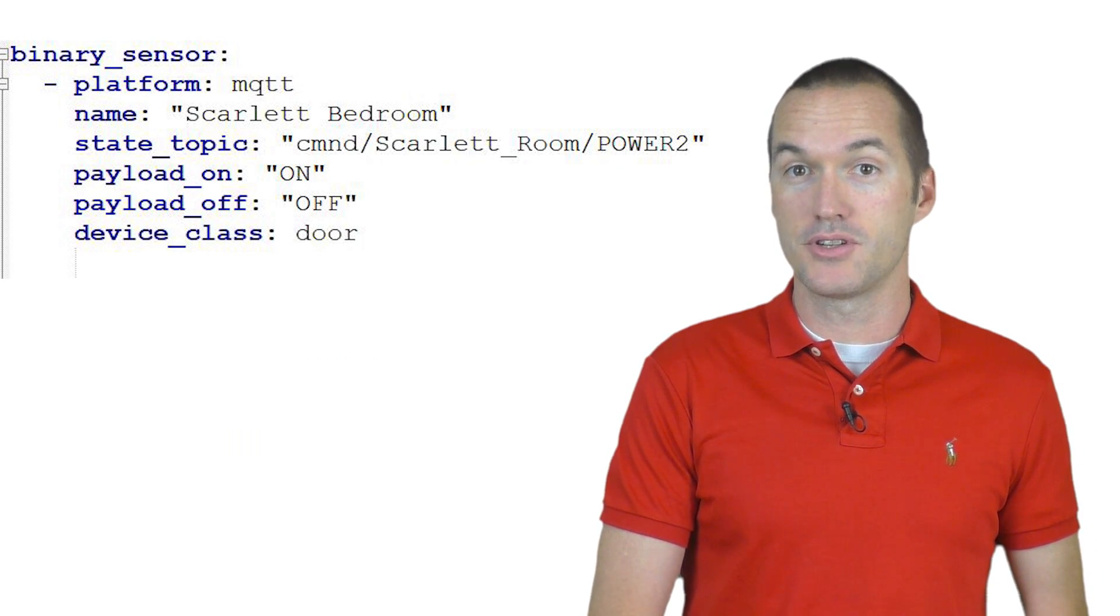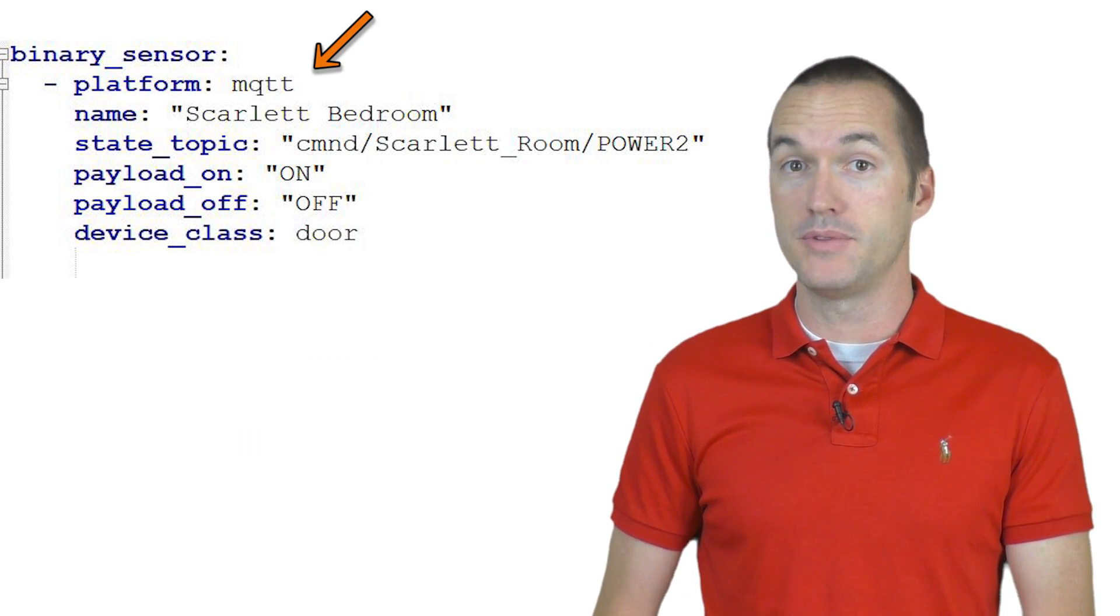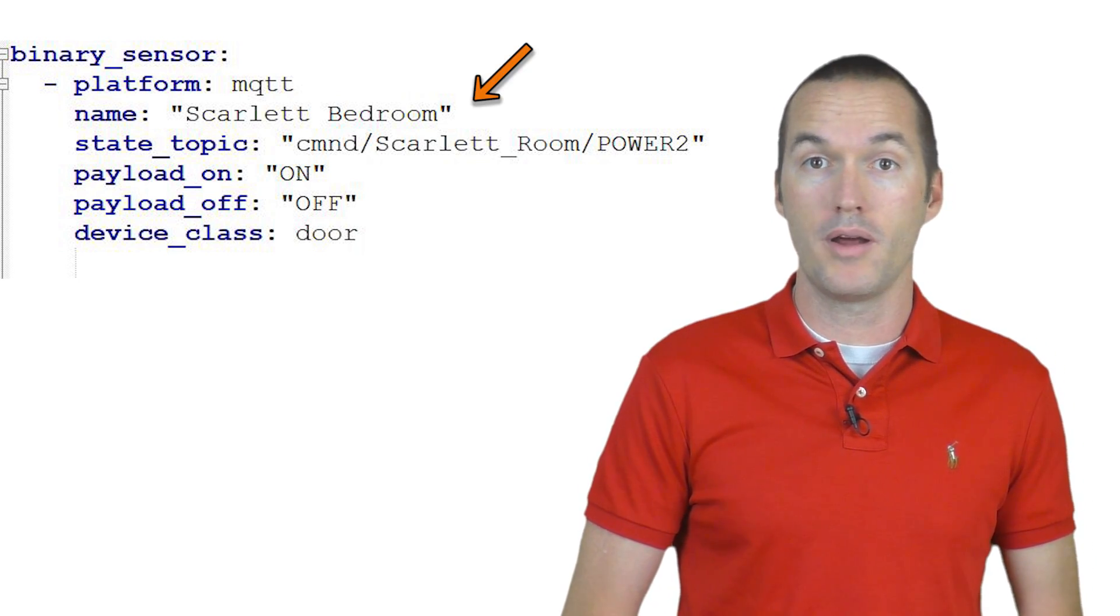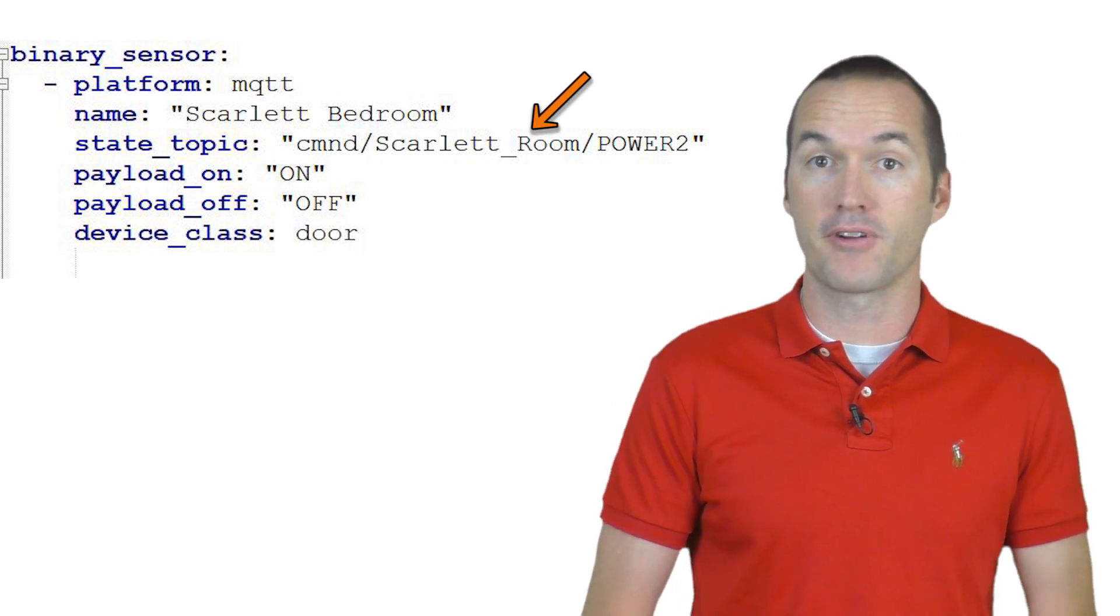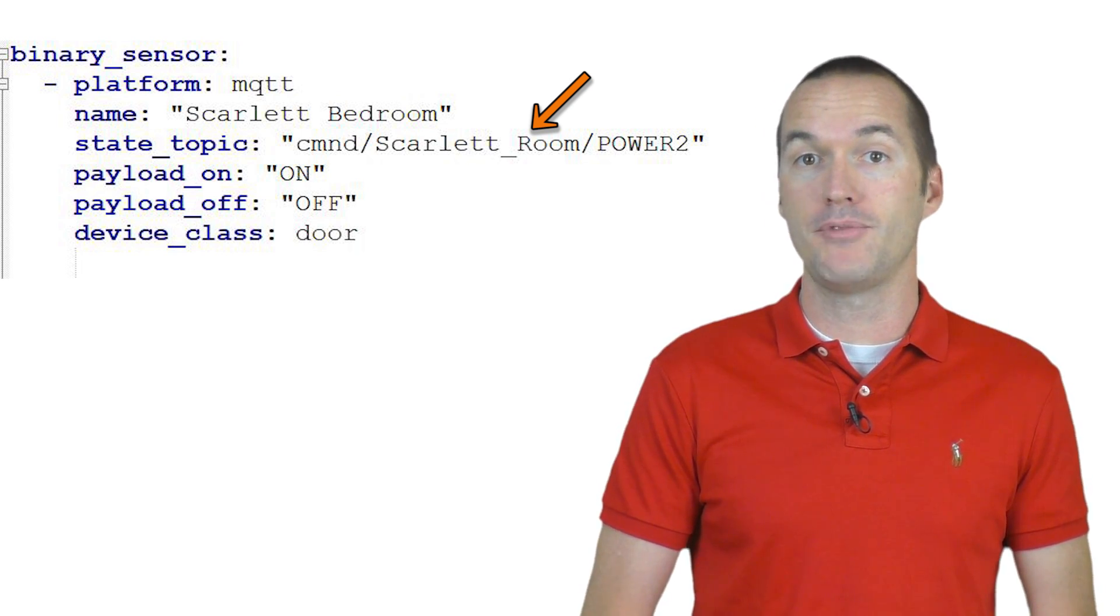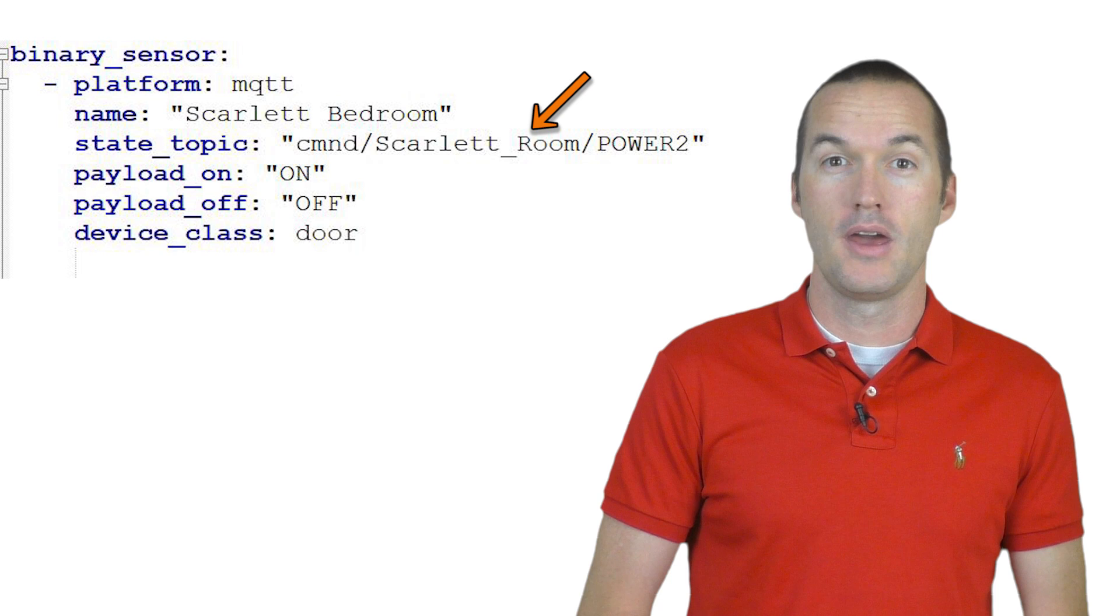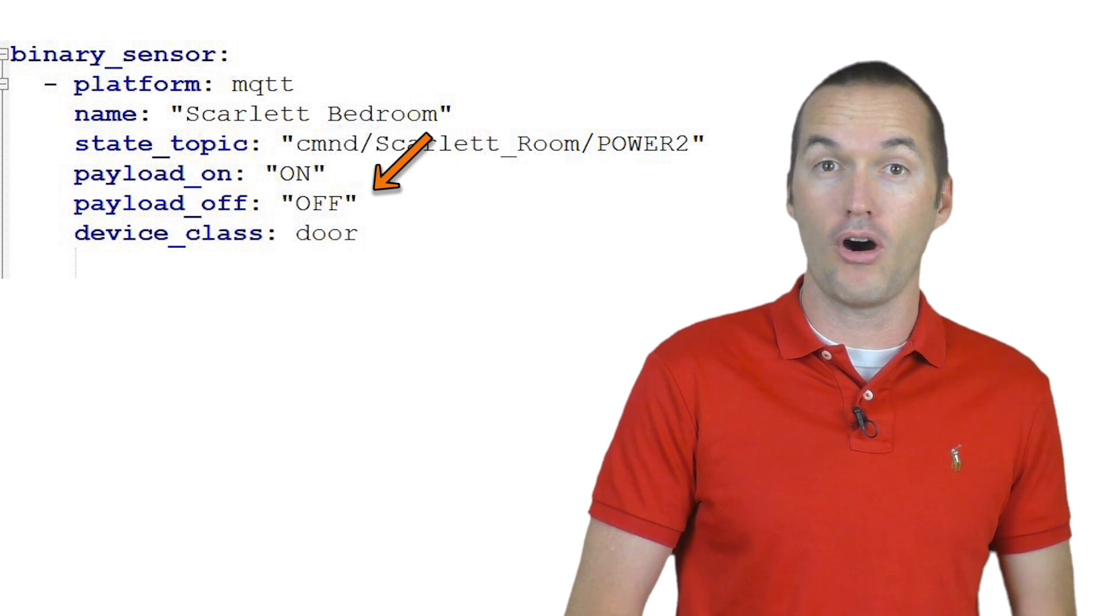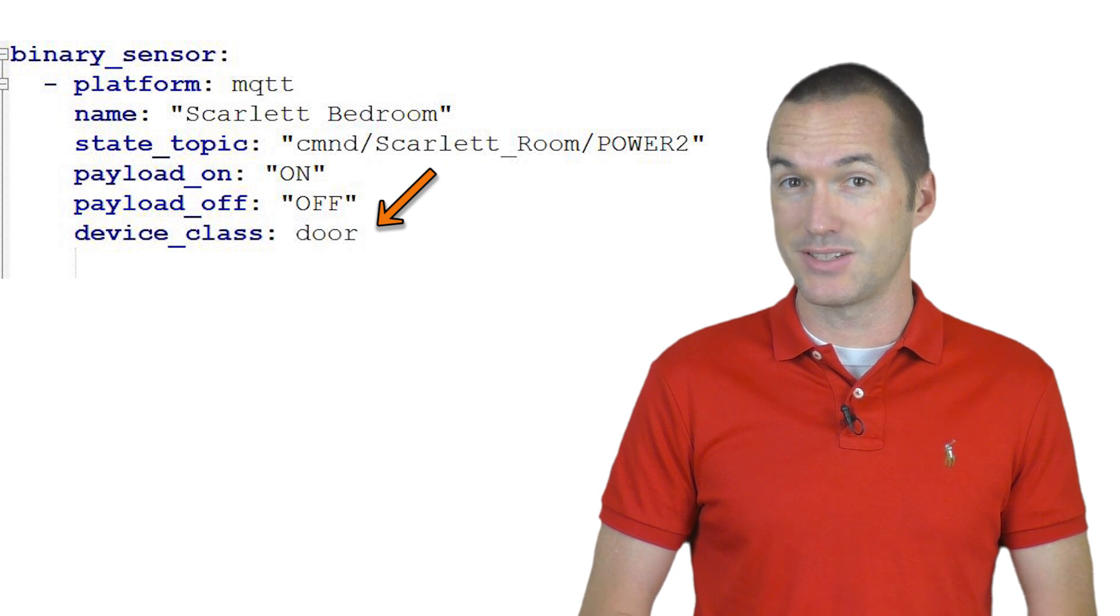You'll want to add a binary sensor to your configuration.yaml file and we're going to define our platform as MQTT. We'll name it whatever we want and our state topic will be cmnd slash and then whatever you named your switch topic slash power2. Define the payload_on as on and the payload_off as off. Finally, you should set up the device_class as a door.